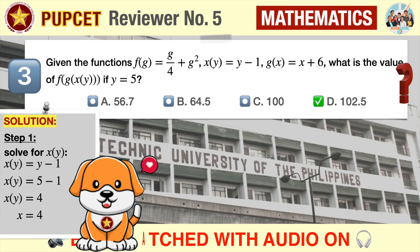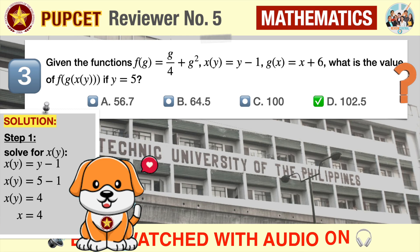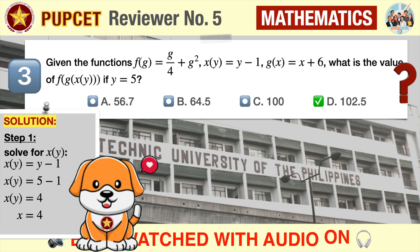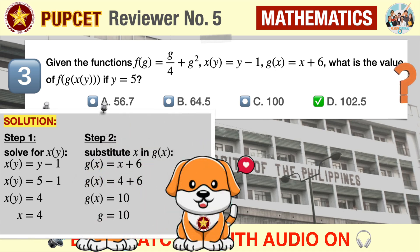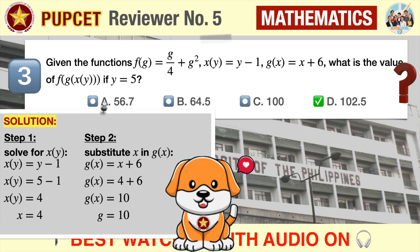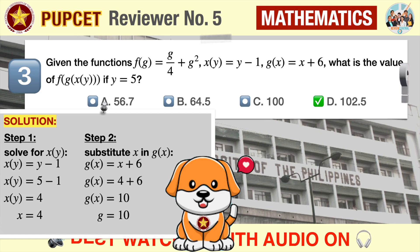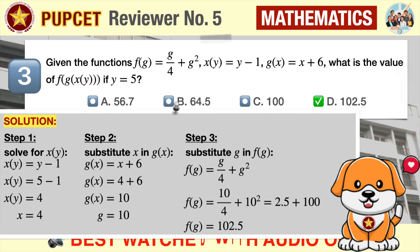Step one: since the value of y is given, we start with the function involving y. x(y) = y minus one. Substituting y equals five, we get x(y) = 4, so x equals four. Step two: we substitute x = four into the g(x) function. g(x) = x plus six = 10, so g equals ten when x equals four.